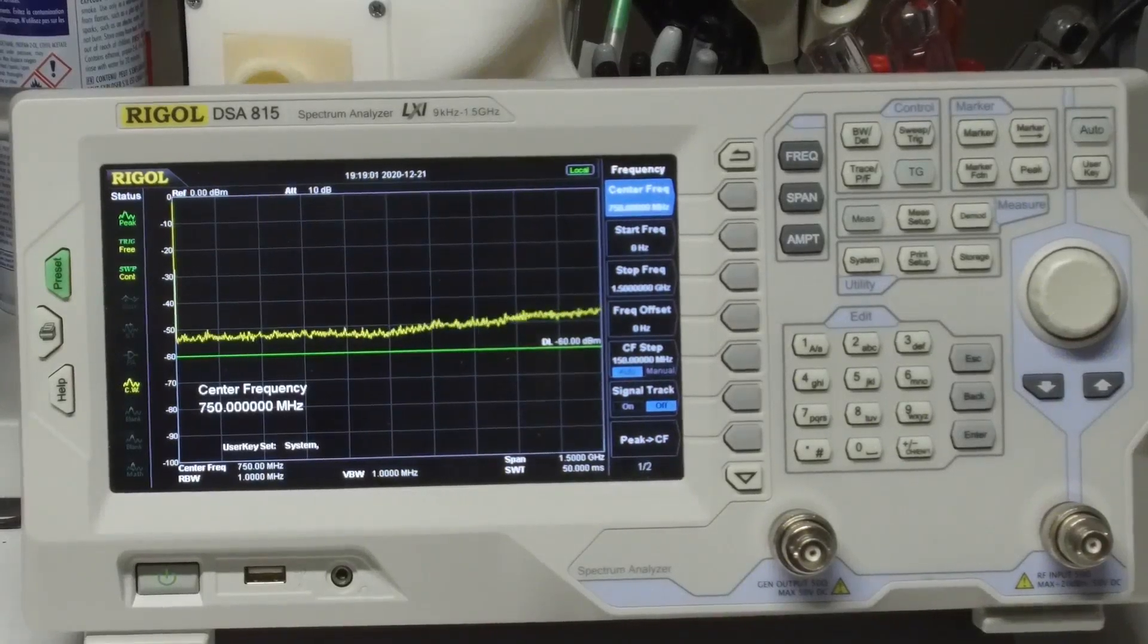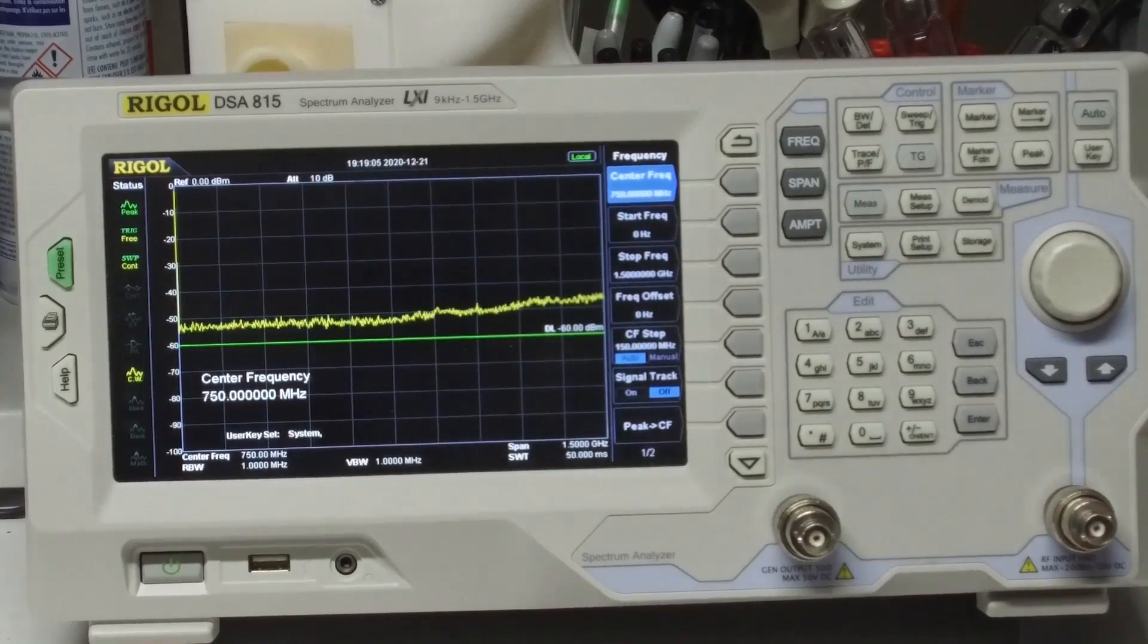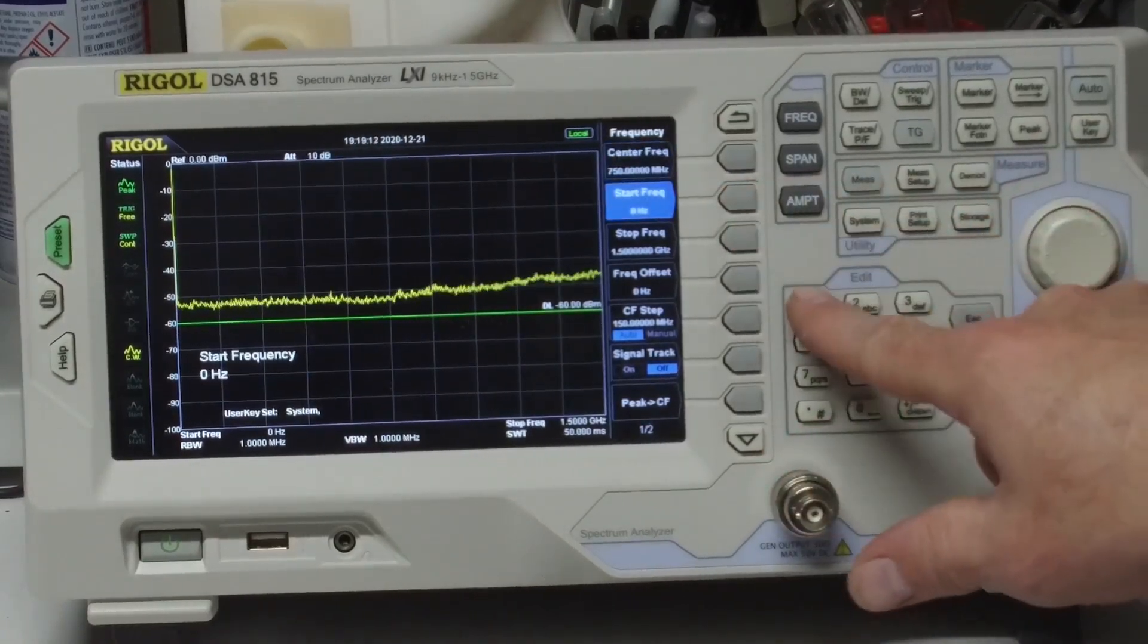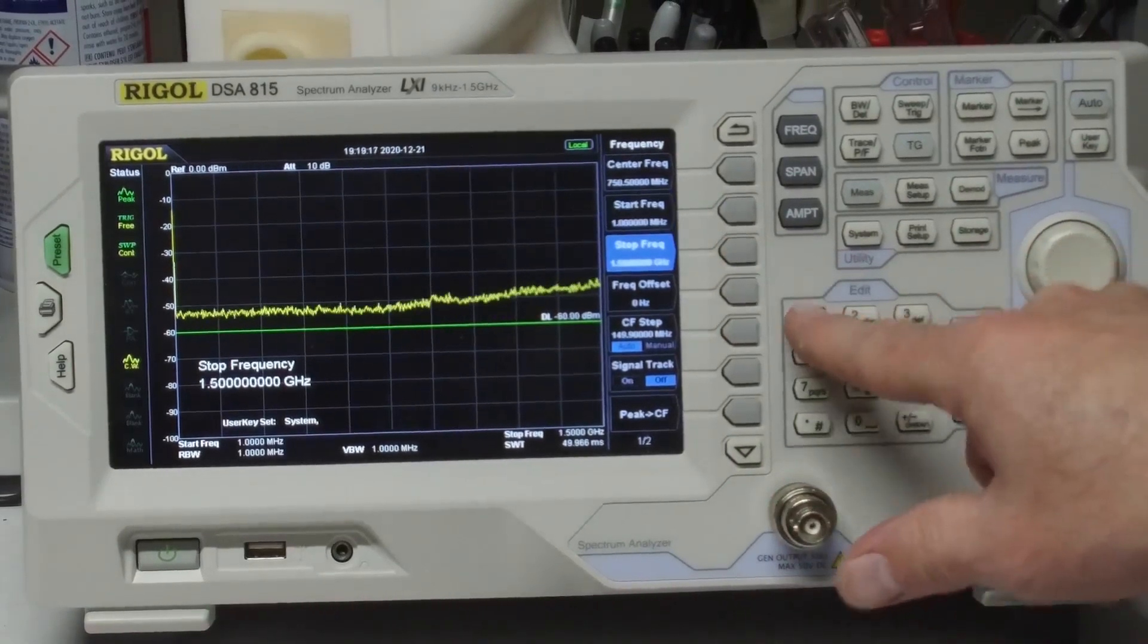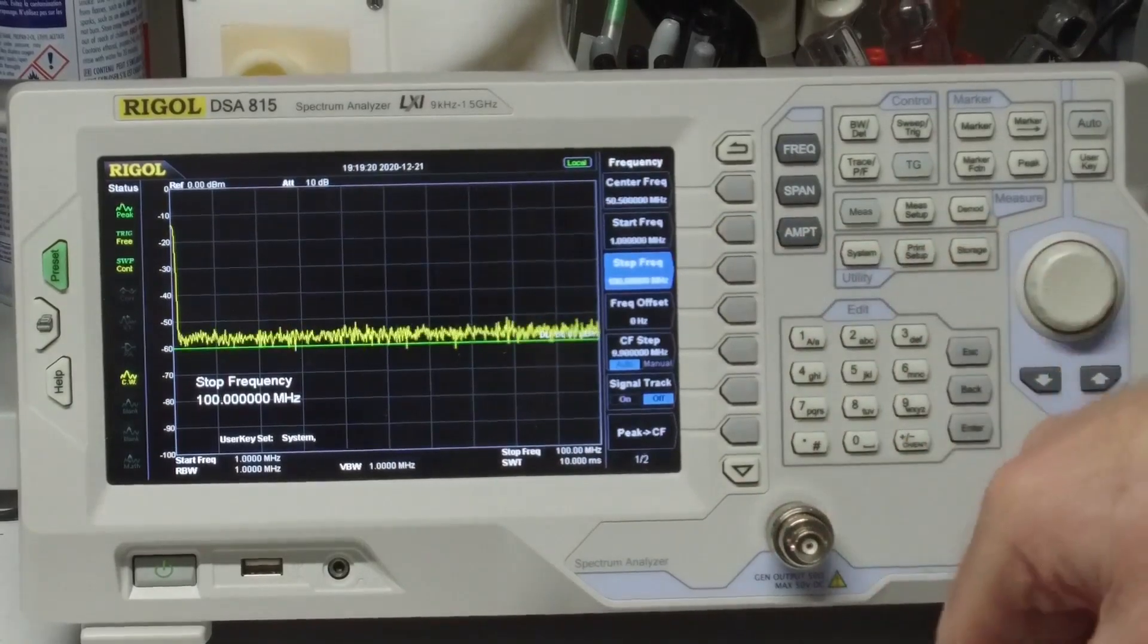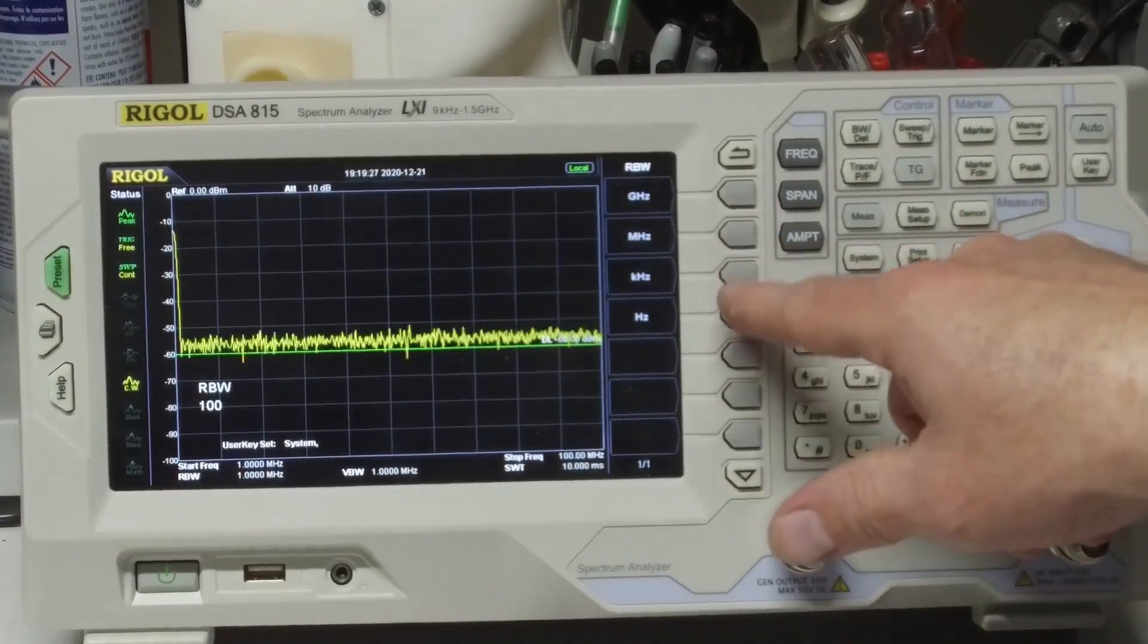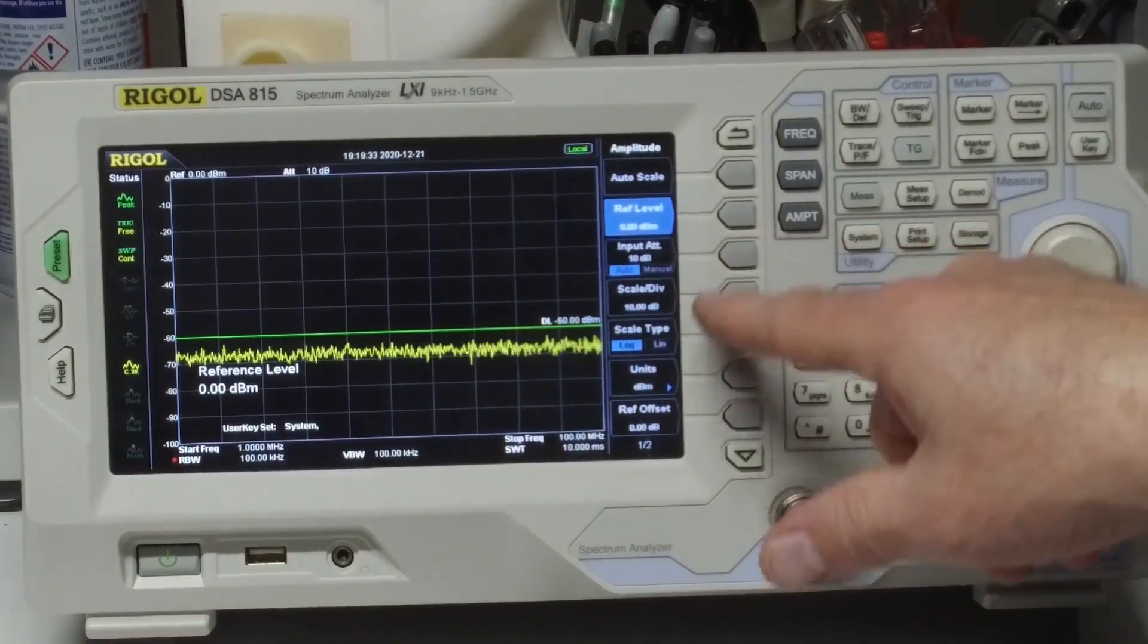Okay, let's set up the spectrum analyzer to make a couple of quick measurements. So I know that this crystal is most likely going to be between one megahertz and 100 megahertz. So let's make that start frequency of one megahertz, stop frequency of 100 megahertz. Let's set our bandwidth to something smaller, let's go to 100 kilohertz.